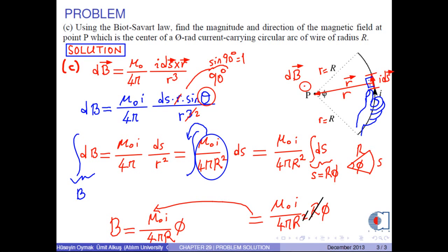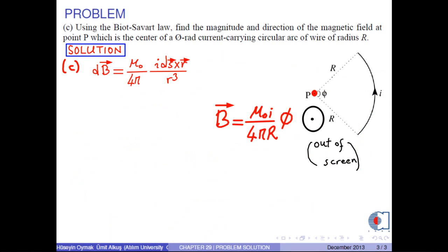Remember that the angle must be in radians, not in degrees. Finally, the magnetic field at point P is B = μ₀ times i over 4πR times φ, directed out of the screen.